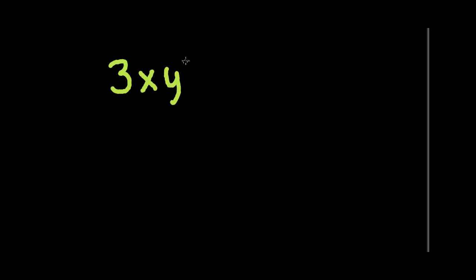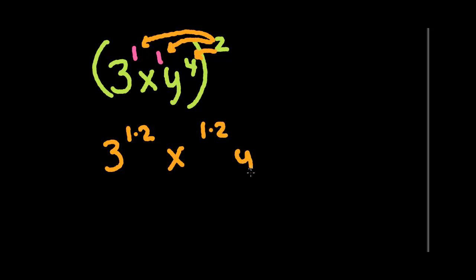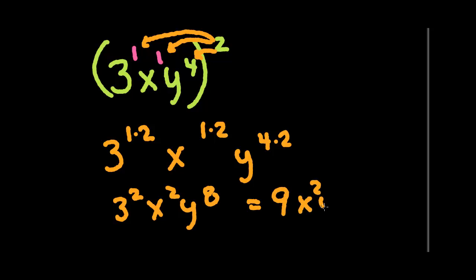Let's do another one: (3xy⁴)². There's no written power on the 3 or the x, but we can write a 1 there for each. Now we distribute the outer exponent 2 among all three terms — they're all power to a power. So it's 3 to the 1 times 2, x to the 1 times 2, and y to the 4 times 2. That gives us 3 squared, x squared, y to the eighth — or 9x²y⁸.